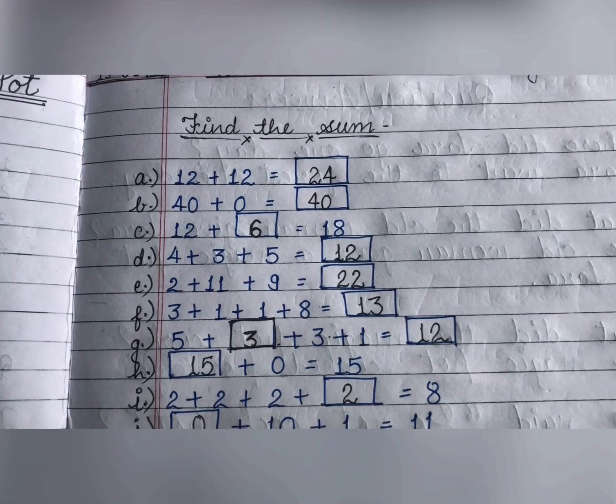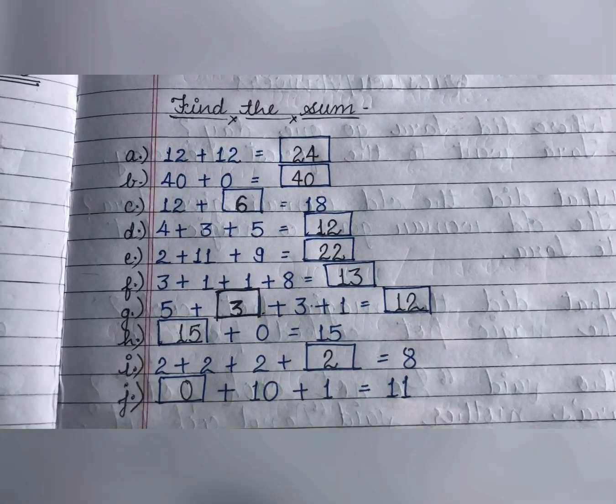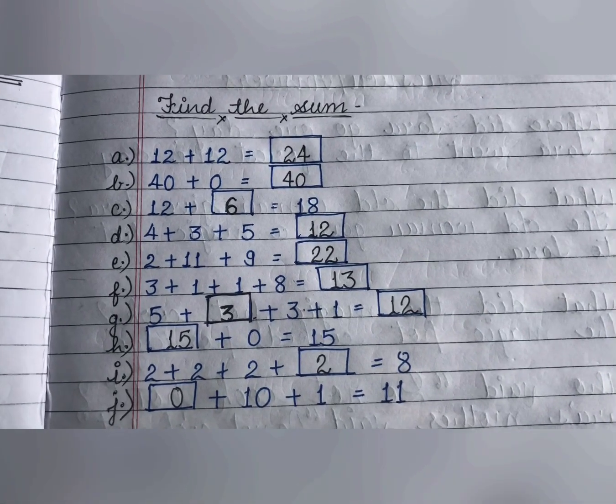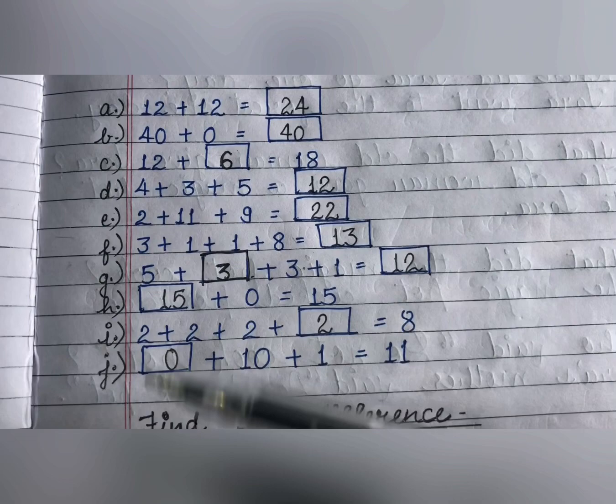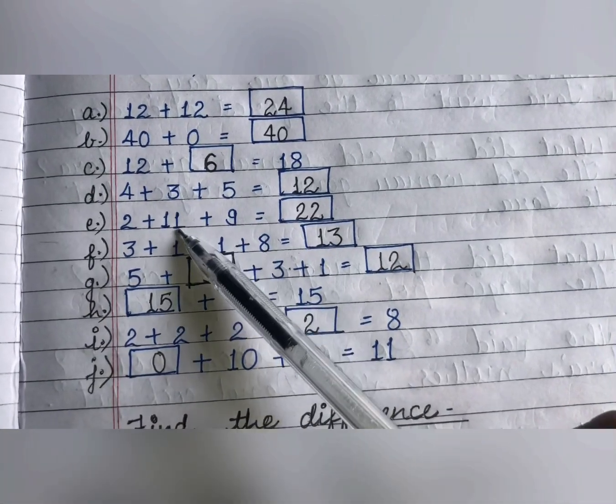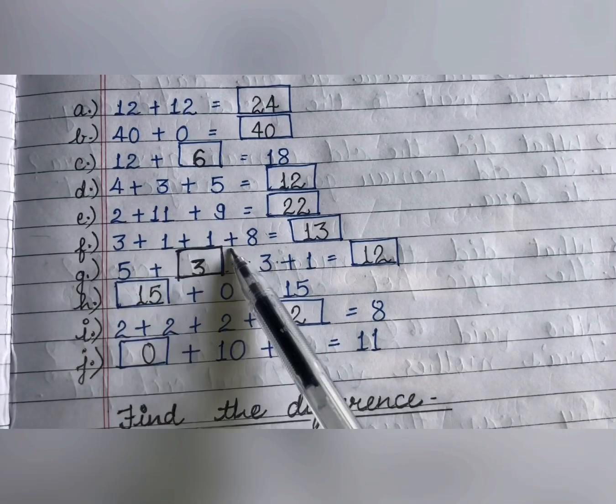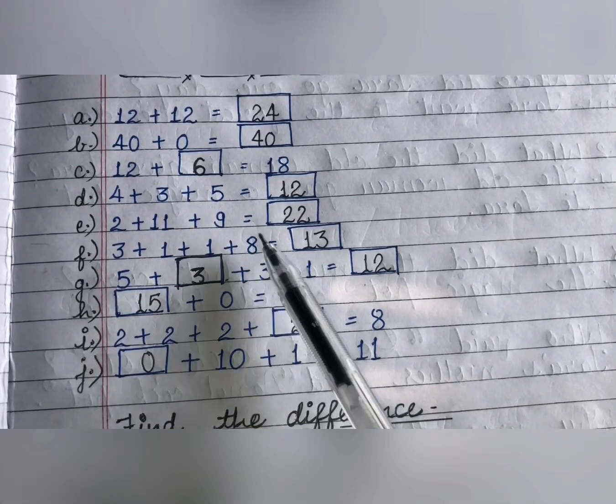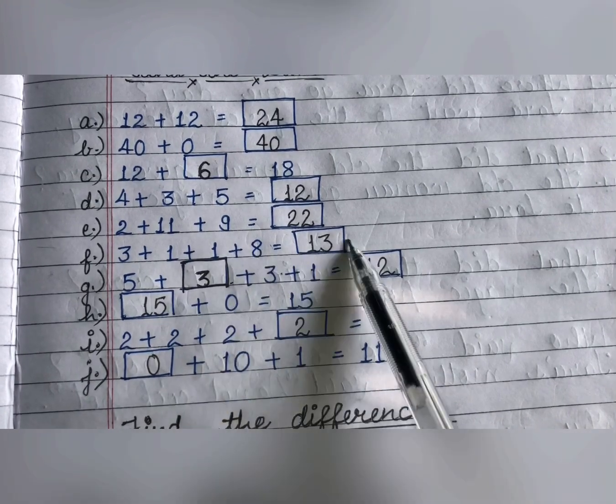Next is 4 plus 3 plus 5. First add 4 and 3, then add 5 and you will get 12. Next is 2 plus 11 plus 9. First you will add 2 to 11, you will get 13. 13 plus 9, 22. 3 plus 1 plus 1 plus 8. Add 1 to 3 to get 4, add 1 to get 5, add 8 to get 13.